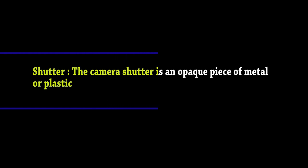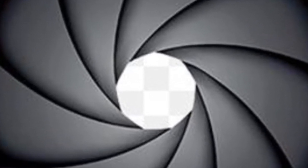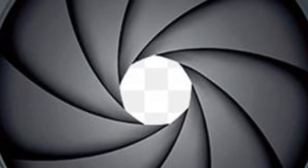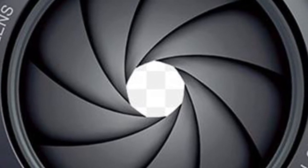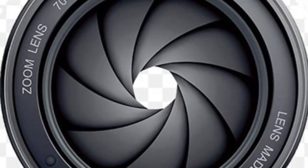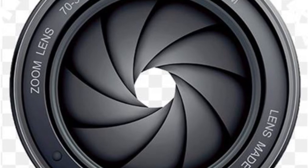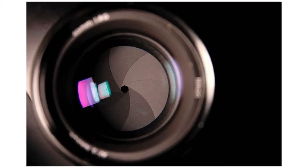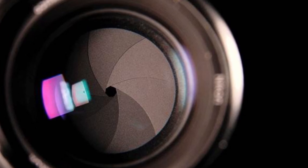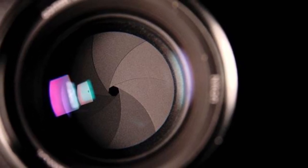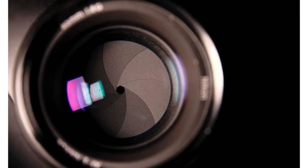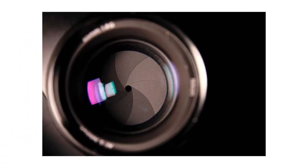The camera shutter is an opaque piece of metal or plastic that controls the amount of light that reaches the camera sensor. The length of time your shutter stays open will determine how your exposure will look. You can activate it using the shutter release button and adjust it accordingly using your camera's shutter speed setting.